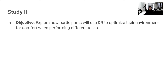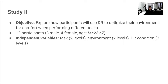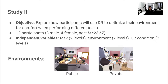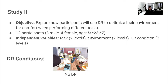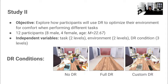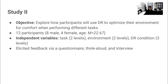Moving on to our second study: in our first study, we identified which effects users prefer. Here, we wanted to explore how participants will actually use diminished reality to optimize an environment for comfort when performing different tasks. We asked 12 participants to perform two tasks in two environments augmented with three diminished reality conditions. In one task, participants assembled a block structure; in a second task, participants watched a one-minute video while monitoring peripheral application windows for notifications. Tasks were performed in both a public and a private environment. Each time, the environment could have no diminished reality, diminished reality applied to all non-task-related objects, or a custom condition where participants decided which objects to diminish and to what extent. Participants could apply either the opacity or outline effects. We elicited feedback through a questionnaire, think-aloud protocol, and a structured interview, using a similar VR simulation apparatus as our first study.